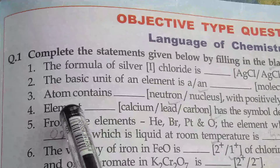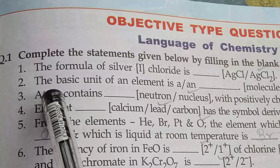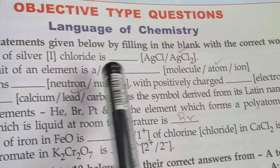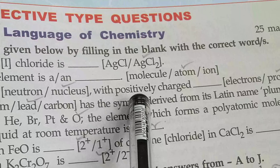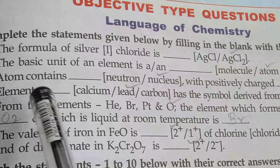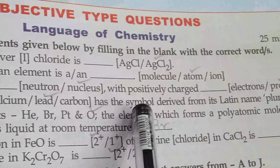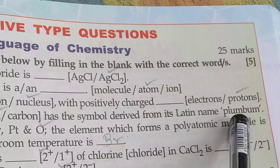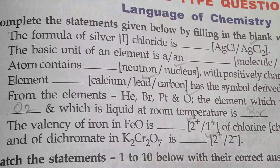Good morning class 8. Welcome back to your chemistry classroom once again. Today I am going to discuss the exercise of this chapter. Let's start with objective type questions. Then I will discuss two questions from the subjective type: first, differentiate between ion and radicals, and second, differentiate between word equation and molecular equation.